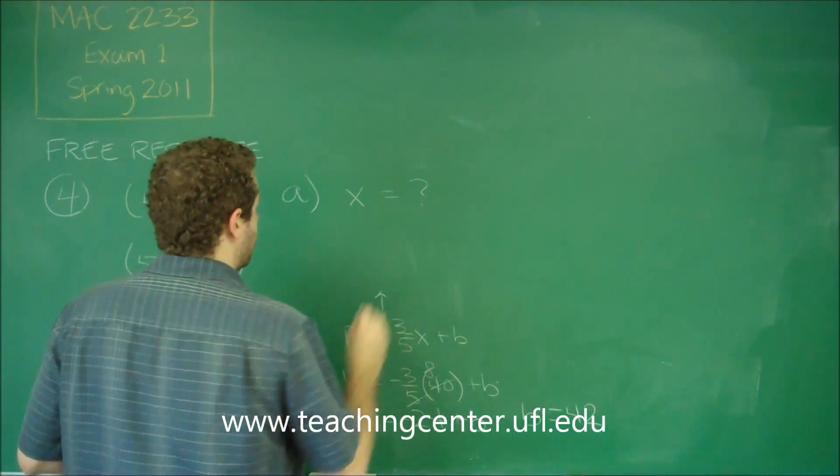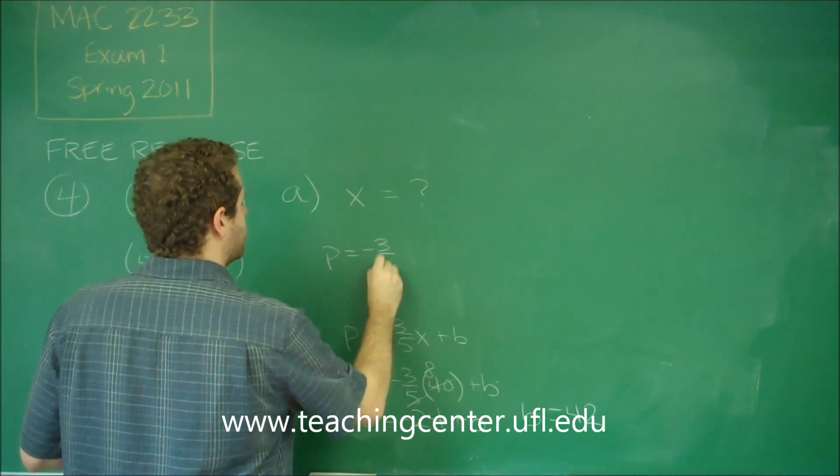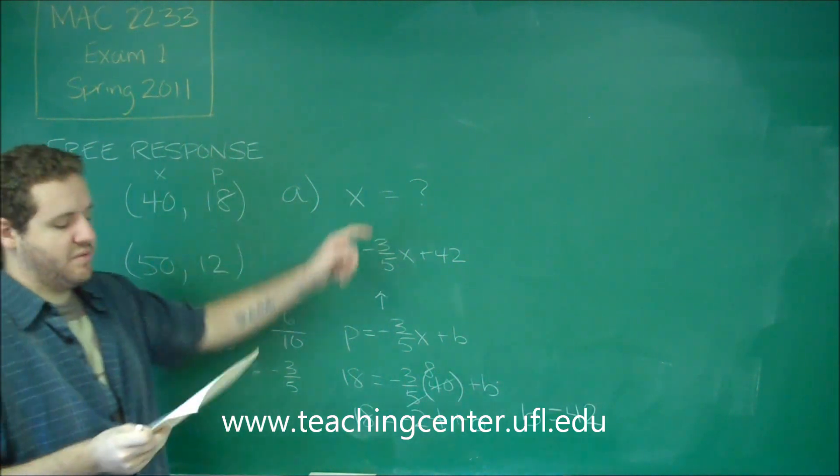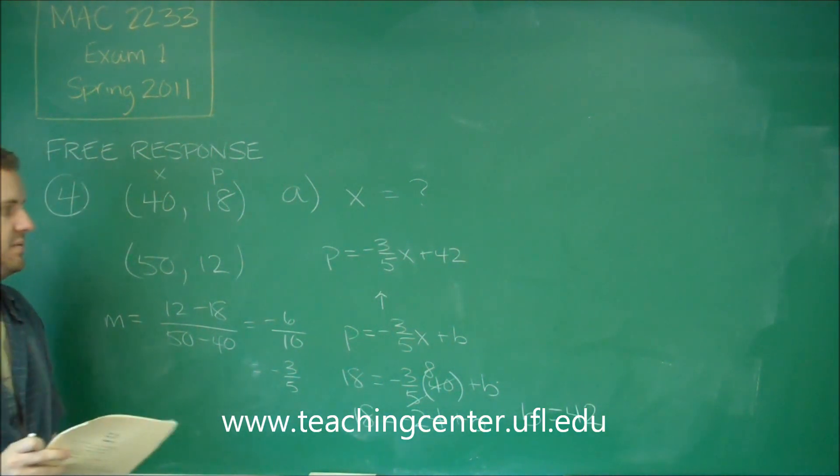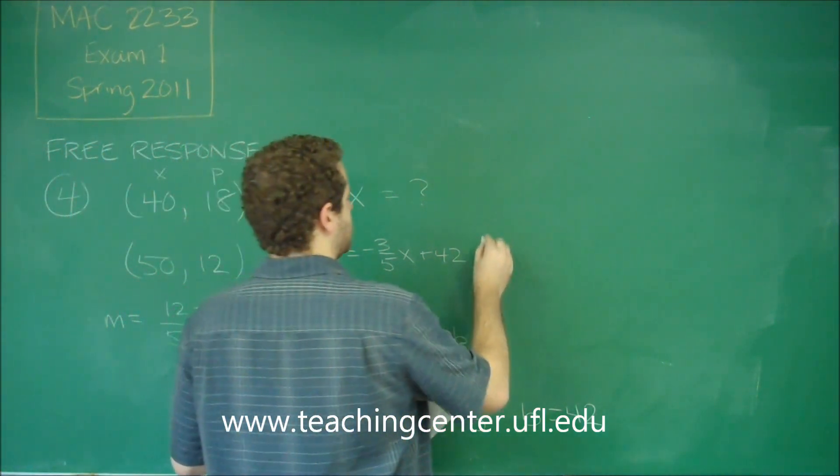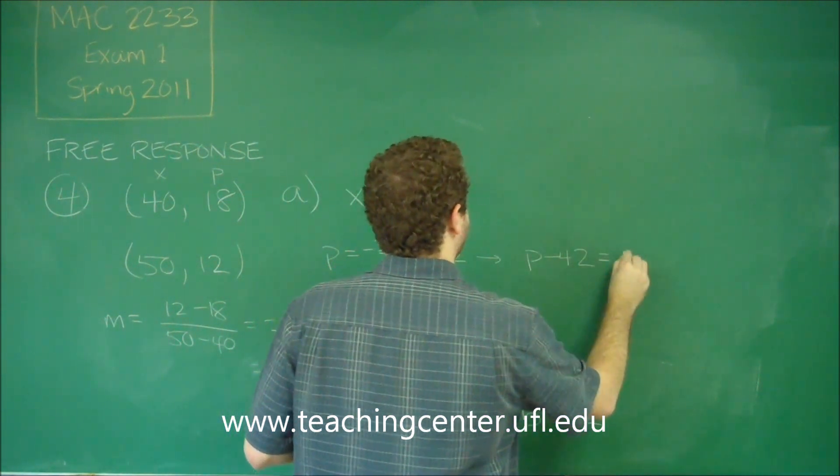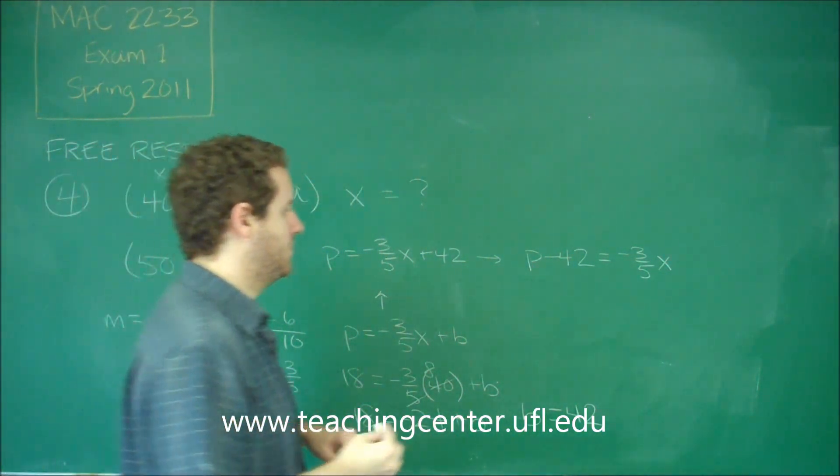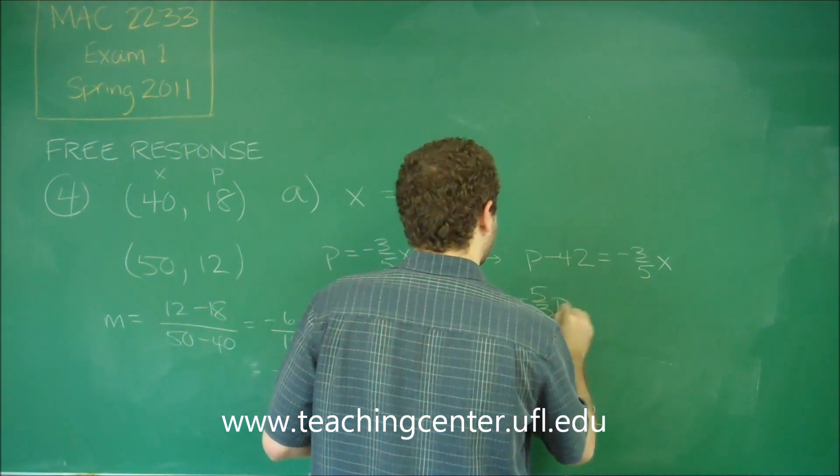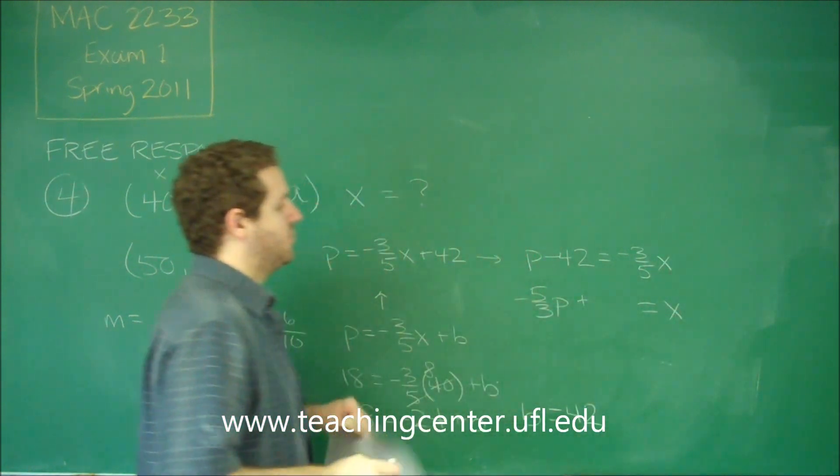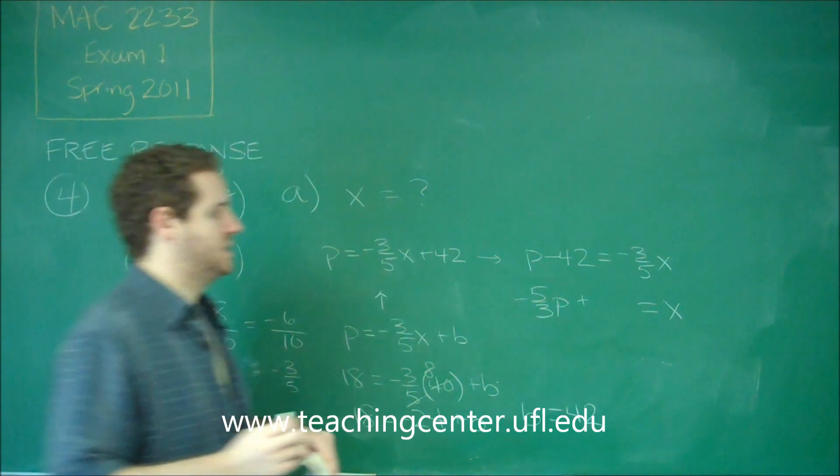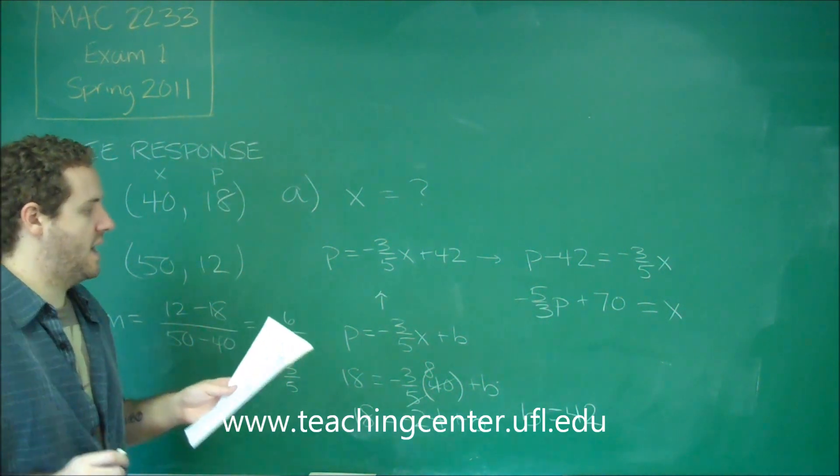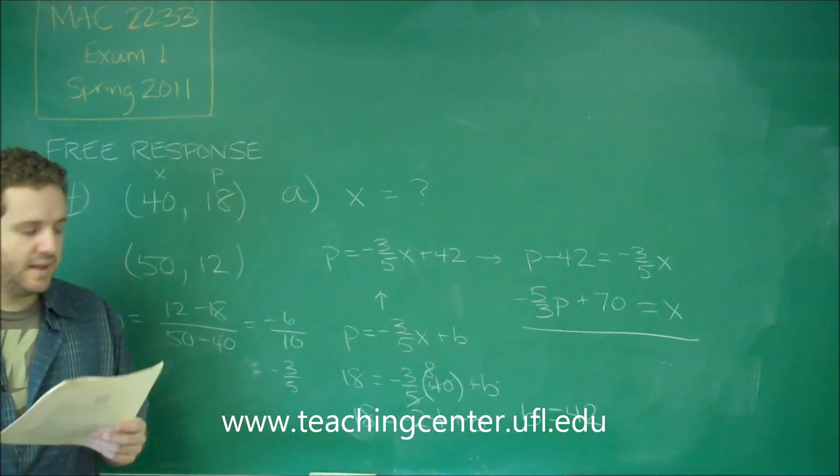So, this means then that our equation is P equals negative 3 fifths X plus 42. The last thing we need to do is solve this in terms of X, because your answer wanted X as a function of P instead of the other way around. If we solve this for X, we're going to get P minus 42 equals negative 3 fifths X multiplied by negative 5 thirds to get rid of that. We're going to get negative 5 thirds P plus... 42 divided by 3 is going to be 14. 5 times 14 is going to be 70. So, negative 5 thirds P plus 70 equals X is our final answer for letter A. X as a function of P.